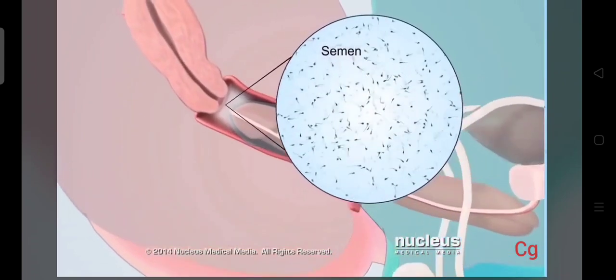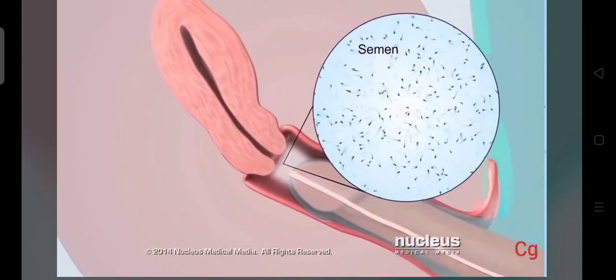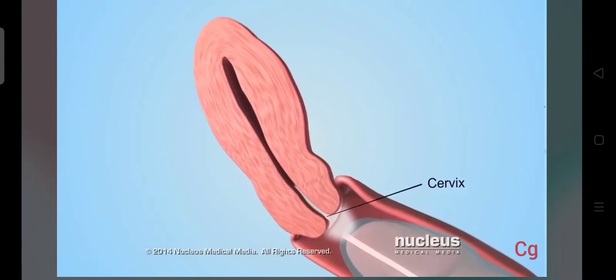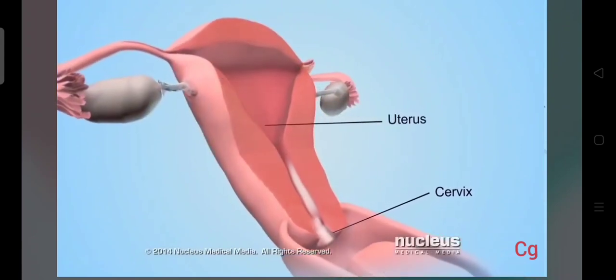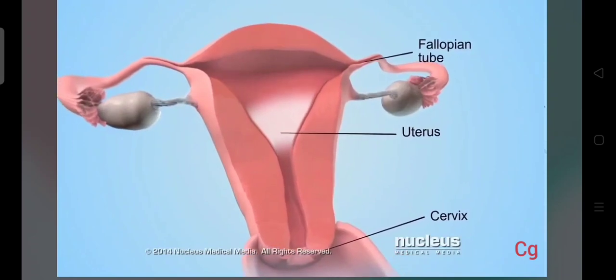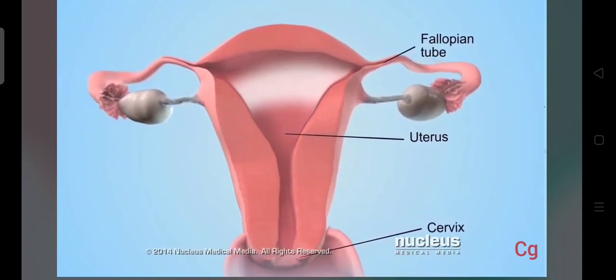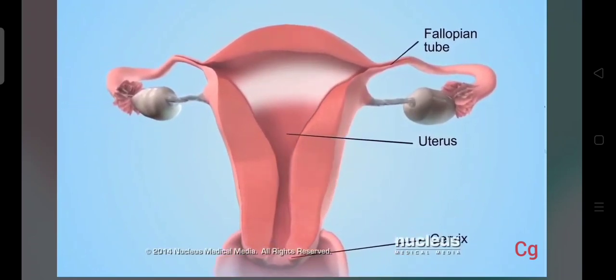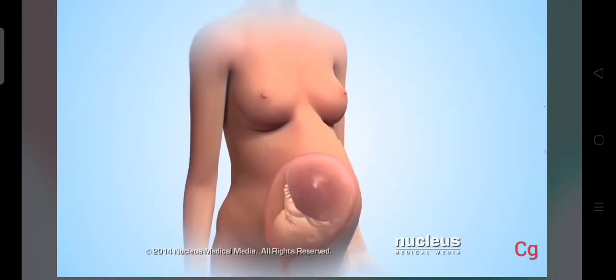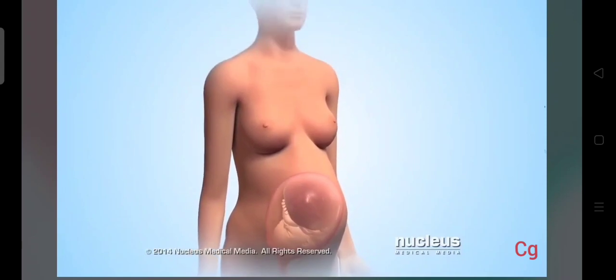Semen contains tens of millions of sperm. From the vagina, sperm can pass through the cervix, uterus, and fallopian tubes to fertilize an egg from the woman's body. Fertilization of the egg marks the beginning of human development during pregnancy.